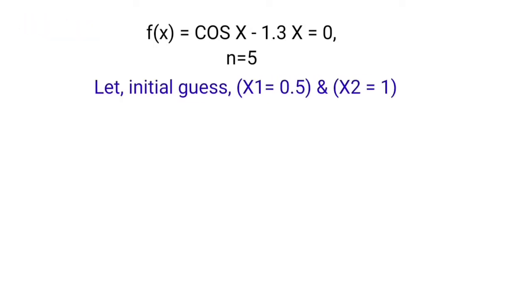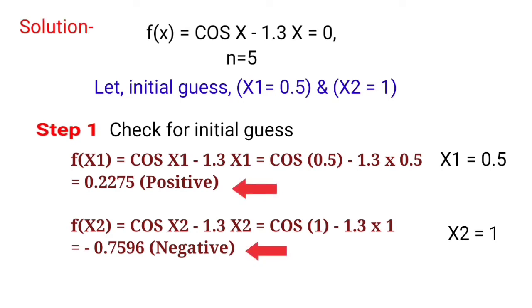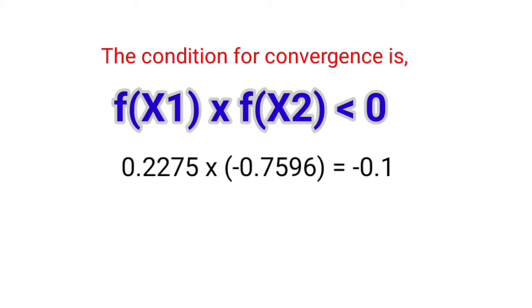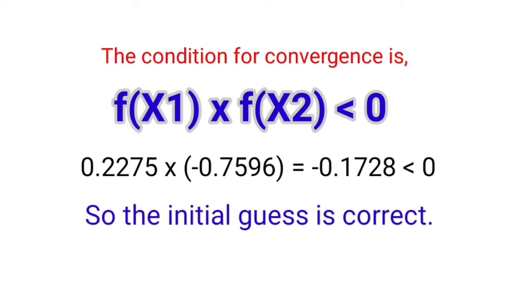Starting the solution: the function is cos(x) minus 1.3x equal to 0, with 5 iterations. We assume initial guesses x1 equal to 0.5 and x2 equal to 1. Finding f(x1) and f(x2): f(x1) is 0.22 (positive) and f(x2) is minus 0.75 (negative). The convergence condition requires f(x1) times f(x2) less than 0, which is satisfied, so our initial guesses are correct.